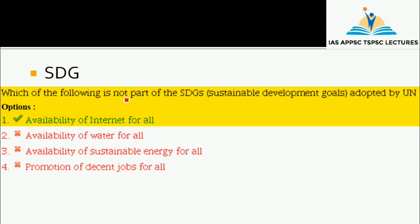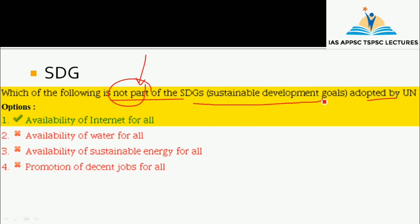If you choose a Sustainable Development Goal question: which of the following is not a part of the SDGs adopted by UN? If you have a total of 17 Sustainable Development Goals, you will be able to answer these questions.